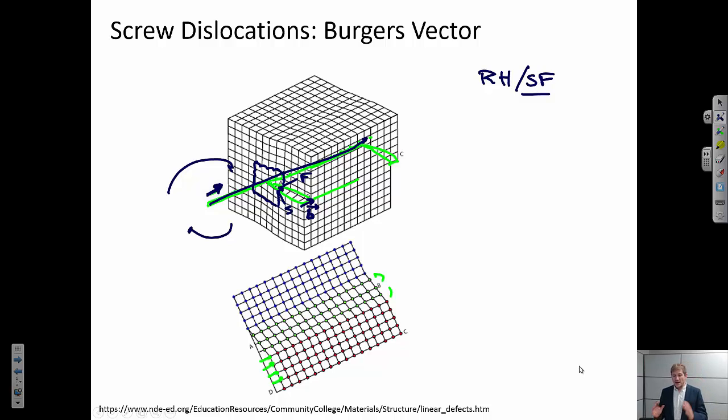Okay, so as opposed to the edge dislocation, for the screw dislocation, the burgers vector is parallel to the dislocation itself. So the line of the dislocation is this line and the burgers vector is this vector here. Those two are parallel. In edge dislocations, those two are perpendicular.